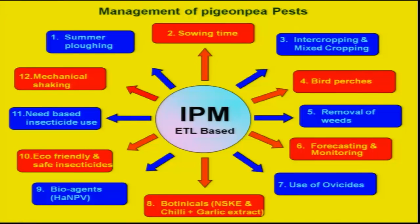Considering all these IPM components from 1 to 12, if adopted, certainly the production and productivity of red gram yield can be increased with maximum net profit. Thank you.